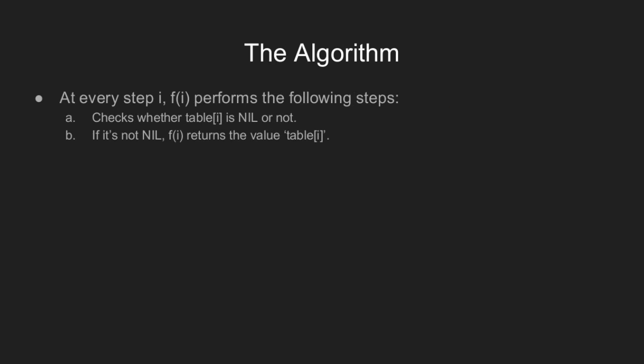At every step, fn first looks into the lookup table to check whether a solution is stored there. If a solution is stored, i.e. table i is not nil, fn returns table i.